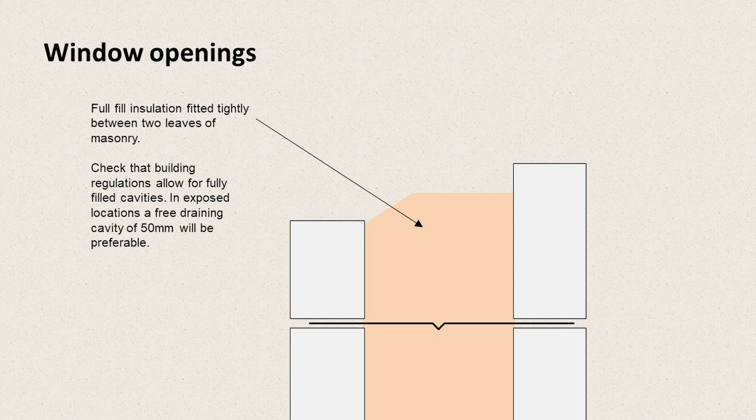We need to check that the building regulations will allow you to do this. The Scottish building regulations state that in areas where there is exposure to heavy weather, they would prefer to have a free-draining cavity — and that's probably a good idea.